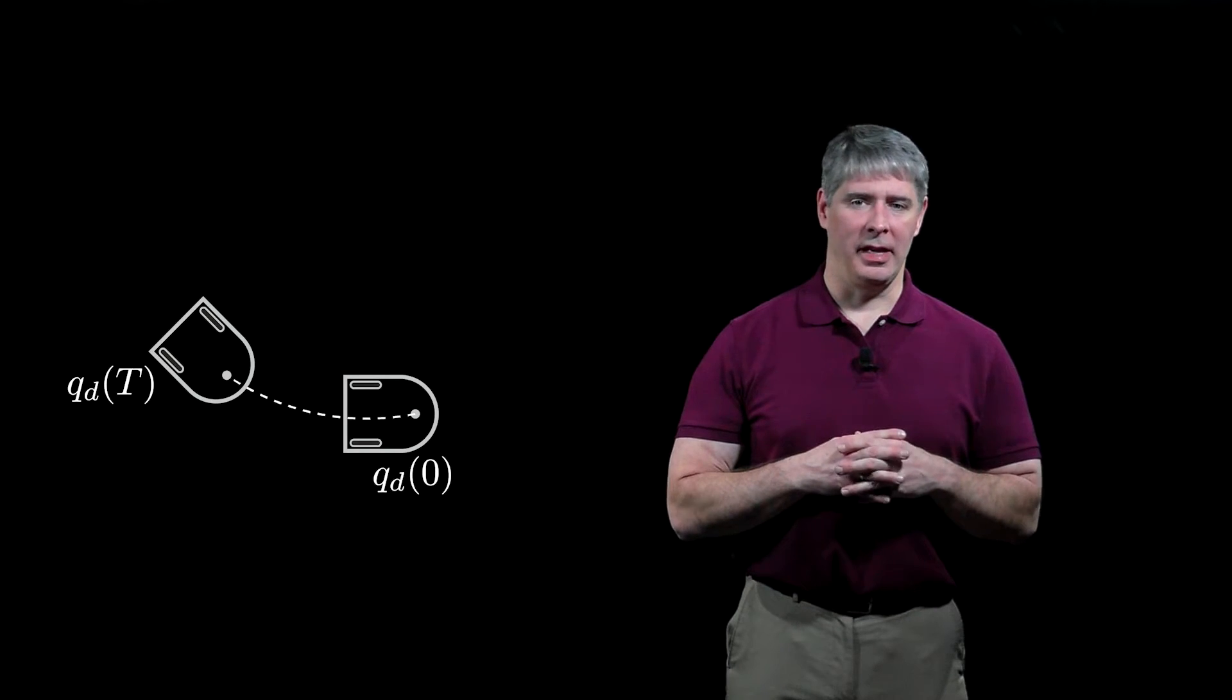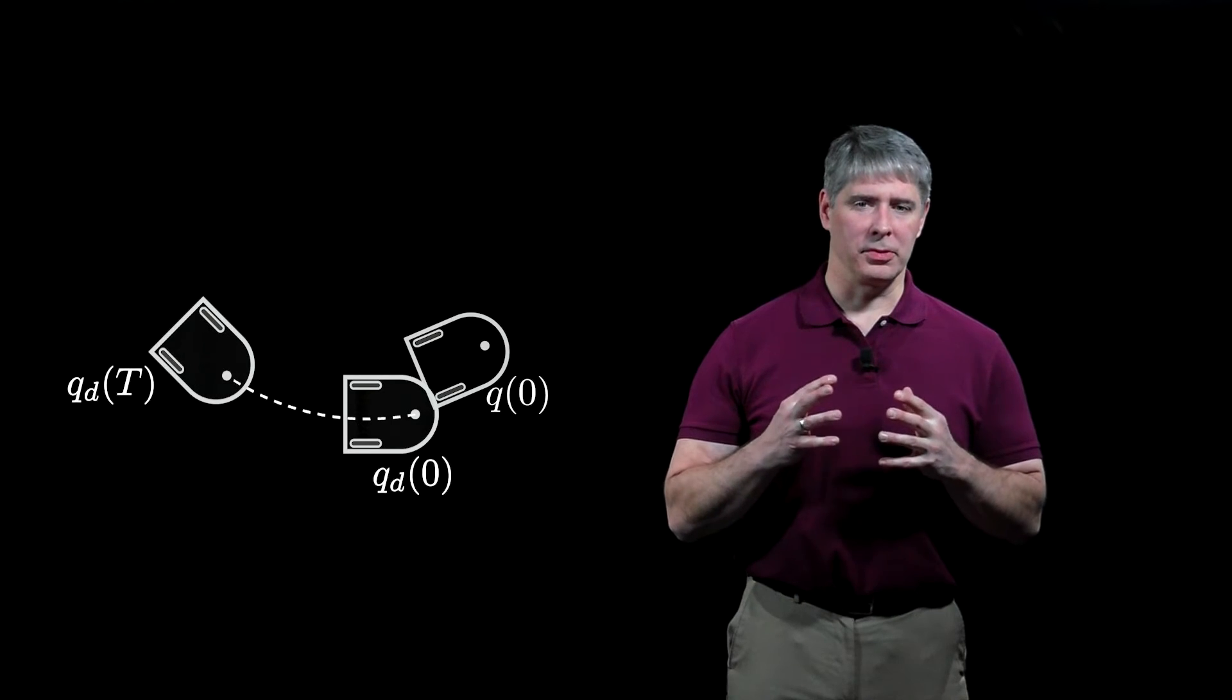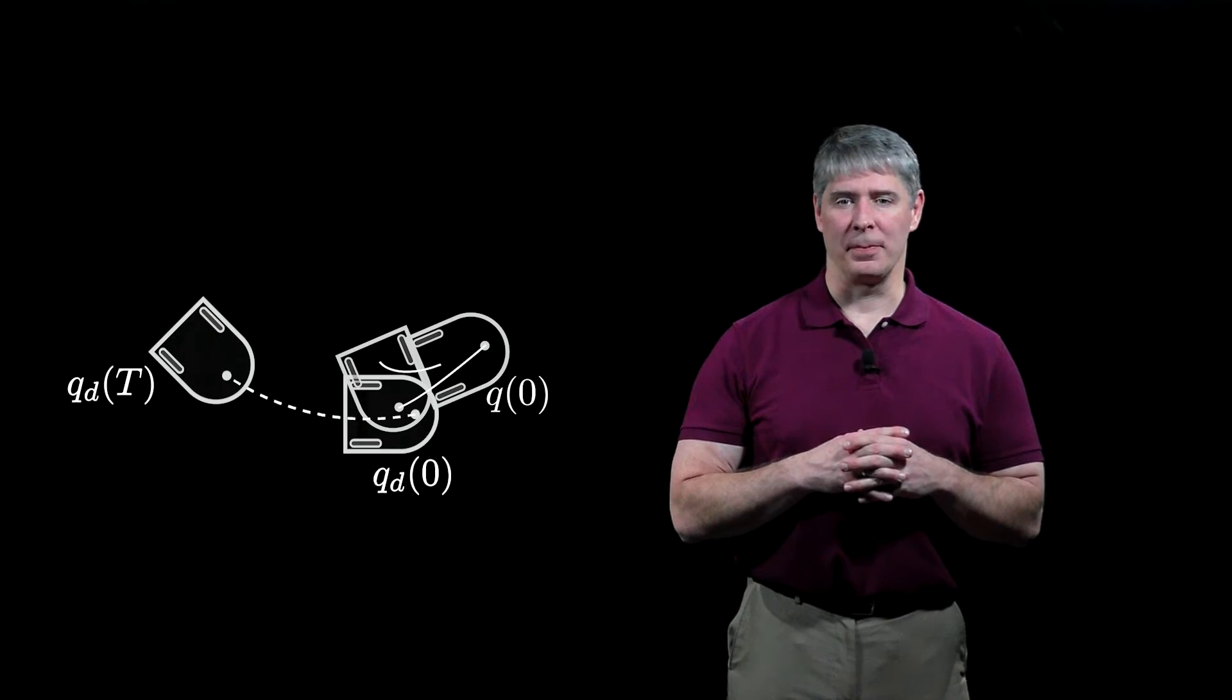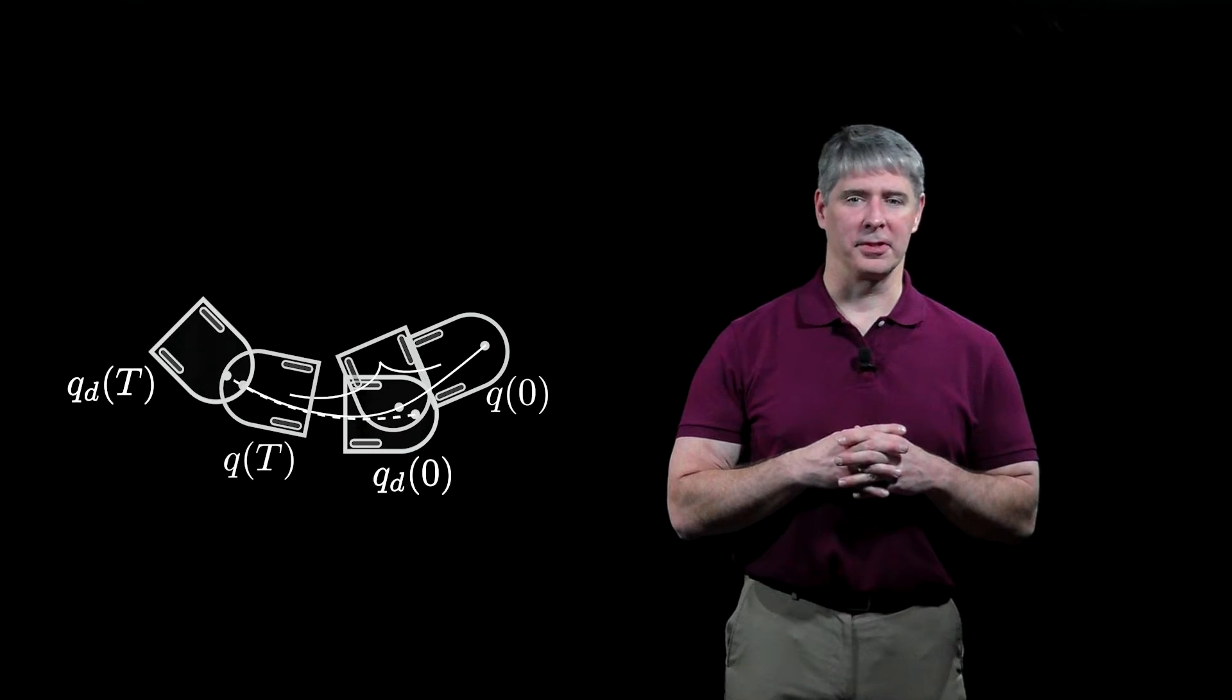Here's another planned trajectory and the actual initial configuration of the robot. Proportional control of the point P causes the point to converge toward the planned trajectory, but the controller causes the robot to execute a direction reversal.